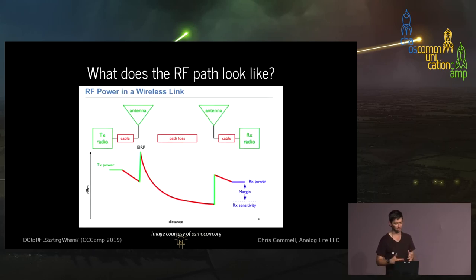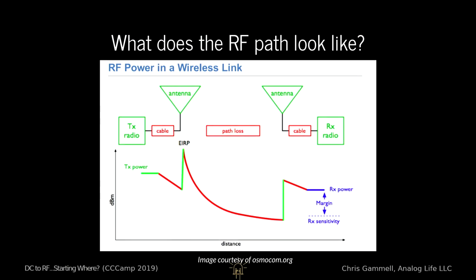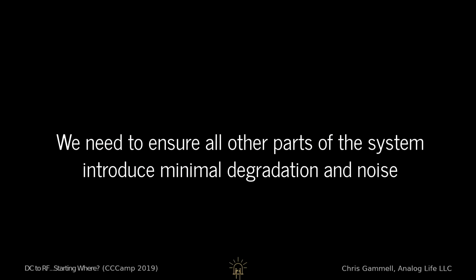Let's talk about what that signal path looks like. On the left side we have a TX radio transmitting, going through a cable, through an antenna, and in the middle there's that red sloping line — that's the loss as it floats through the air from a cell tower to your phone. Then it hits the antenna on your phone, there's some gain, then a cable, then the receiver. All these stages either add or remove signal. We want to make sure we're not adding any degradation or noise as we go through our systems.